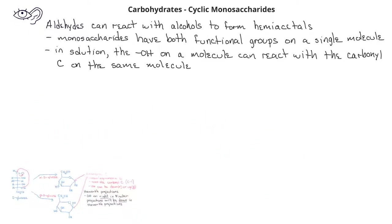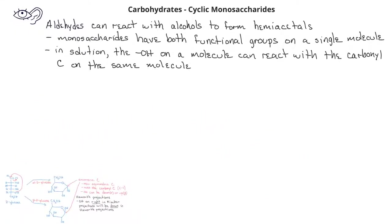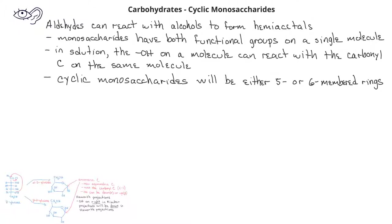Monosaccharides of different kinds can form either 5-membered or 6-membered rings. If a monosaccharide forms a 5-membered ring, we call that cyclic 5-membered ring a furanose. If a cyclic monosaccharide is a 6-membered ring, we call that a pyranose.